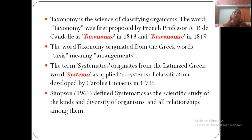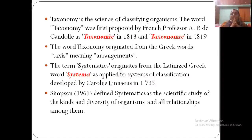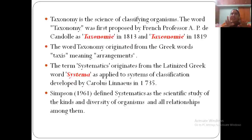Before we begin classification, what is taxonomy? It is the science of classifying organisms. The word taxonomy was proposed by A.P. de Candolle in 1813, and the term 'taxonomy' was formally used in 1819, also proposed by de Candolle. The word originated from Greek words: 'taxis' meaning arrangement. We arrange and group organisms to make it very easy for us to study and understand — like a library or a showroom.